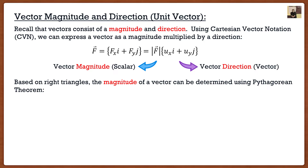Keep in mind that if we know the components of a vector, we're essentially creating a right triangle. If I'm going three units in the horizontal direction and two units in the vertical direction, the magnitude — which is the hypotenuse of this triangle — can be found using simple trigonometry: the magnitude is the square root of the x component squared plus the y component squared.